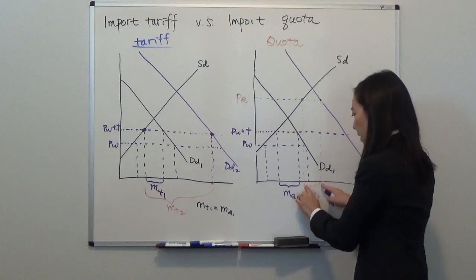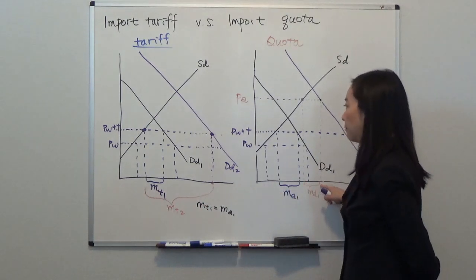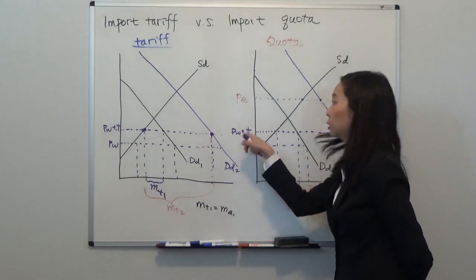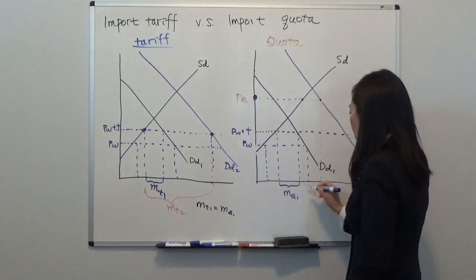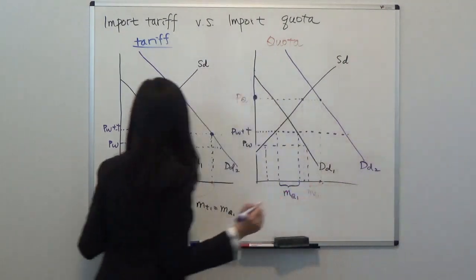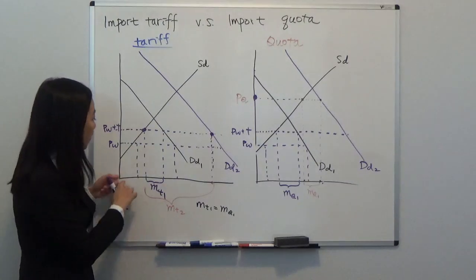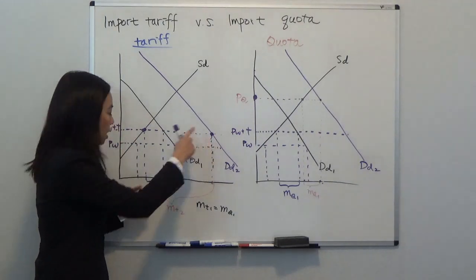You can see that will be your import, much less than before. Also the price will go up from PW+T to PQ, so you can see the price is a lot higher and the quantity is as small as before.